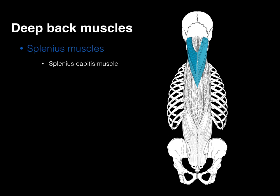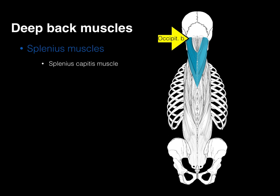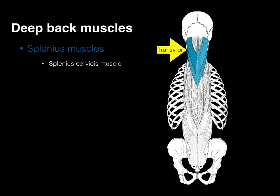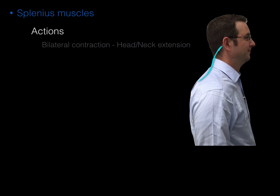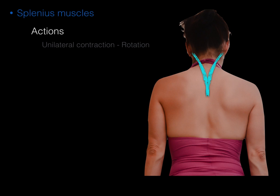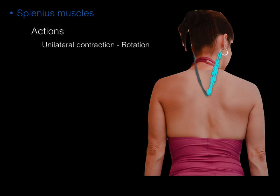There are two splenius muscles. The splenius capitis attaches to the head, with its origin on the spinous processes of the lower cervical and upper thoracic vertebrae, inserting on the mastoid process of the temporal bone and adjacent occipital bone. The splenius cervicis attaches to the spinous processes of the upper thoracic and inserts on the transverse processes of the upper cervical vertebrae. Collectively, when contracting bilaterally, they result in head and neck extension. When acting unilaterally, contraction results in rotation of the head to the ipsilateral side — synergistic to the SCM.